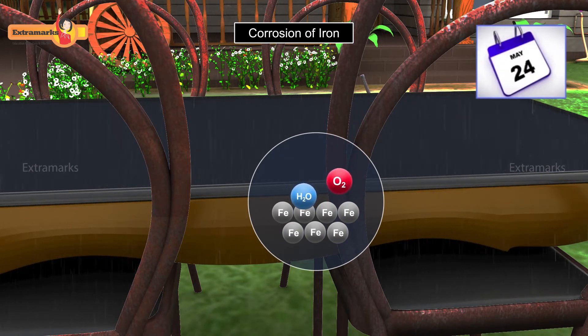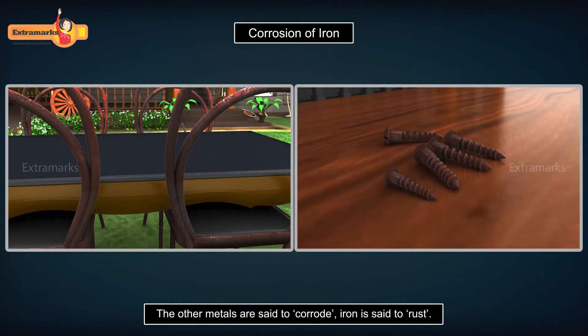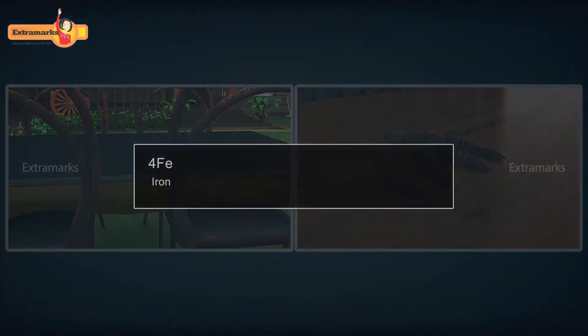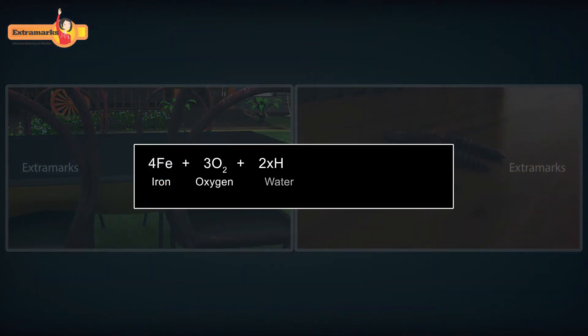Remember, while the other metals are said to corrode, iron is said to rust. Iron, when exposed to moist air, reacts with oxygen and water to form hydrated iron oxide. The hydrated iron oxide is called rust and it is reddish-brown in color.